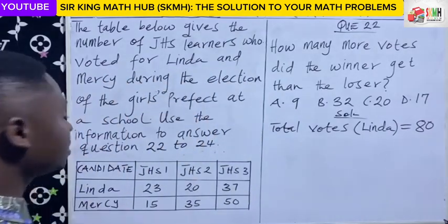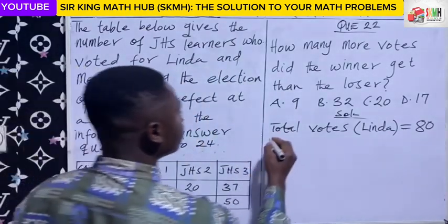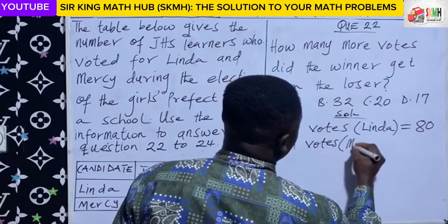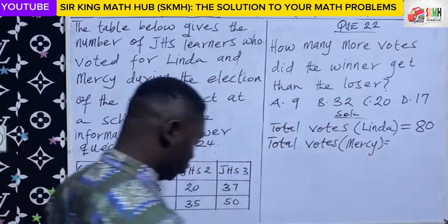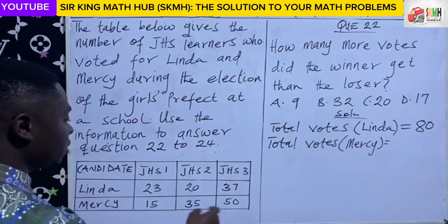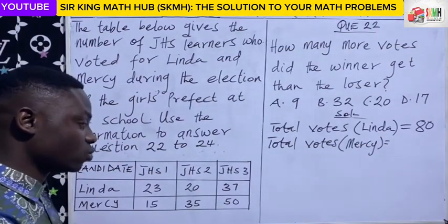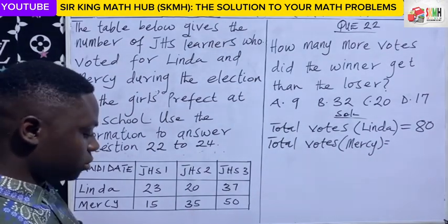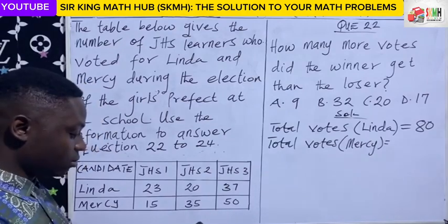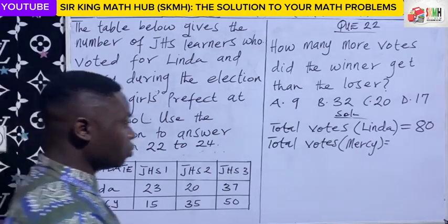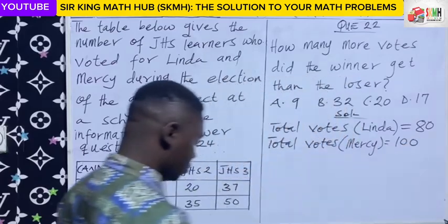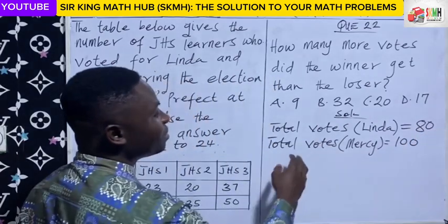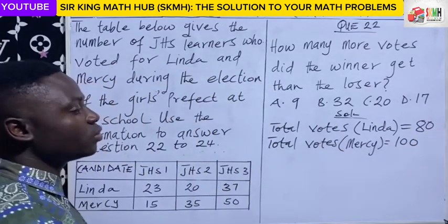Let's also calculate the total votes for Mercy. Adding up the votes she accrued from GHS1, GHS2, and GHS3: 15 plus 35 plus 50, giving us 100. So Linda had 80 votes and Mercy had 100 votes.